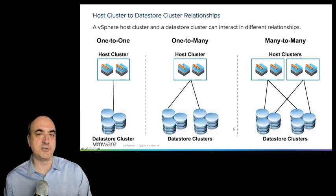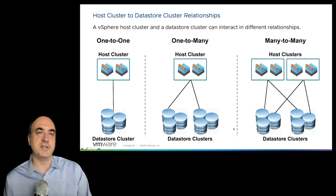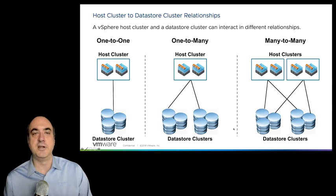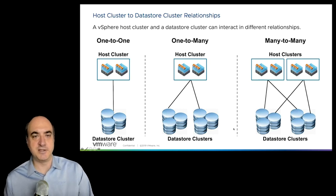When creating a data store cluster, you associate it with a host cluster. You can associate one host cluster with multiple data store clusters — for example, a gold storage cluster and a silver storage cluster — allowing VMs to reside in either tier. You can also have multiple host clusters, such as finance and engineering, both using the same gold and silver storage, creating a many-to-many mapping between host clusters and data store clusters. Host clusters automate vMotion; data store clusters automate storage vMotion.